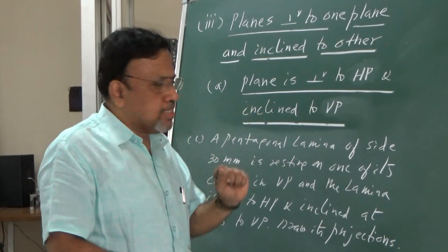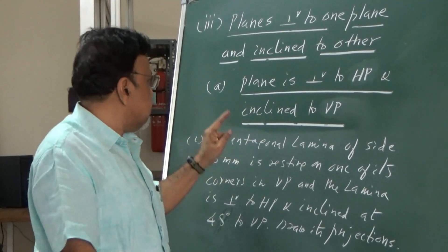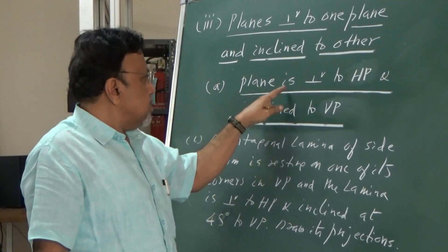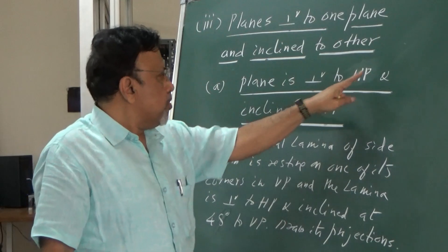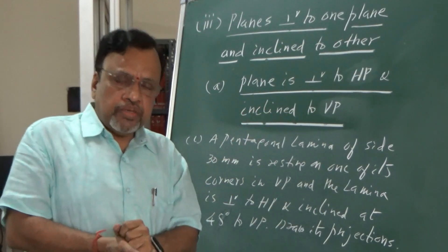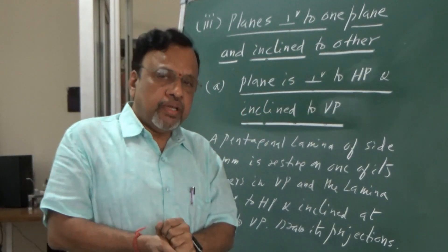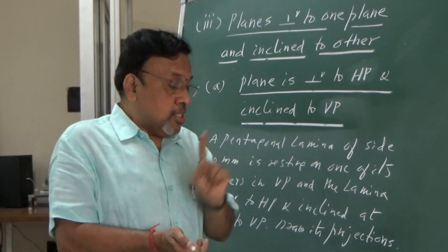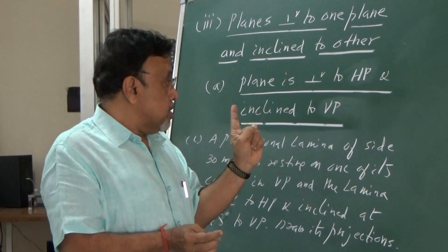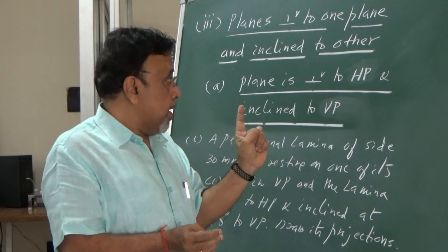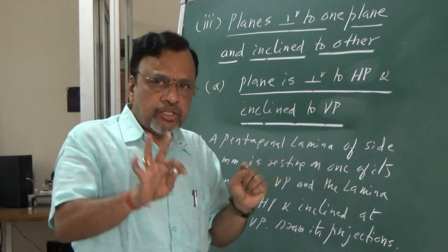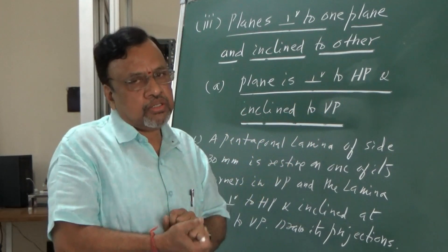Now let us analyze the second case. Second case: the plane is perpendicular to HP and inclined to VP. Since the lamina is inclined to one plane and perpendicular to the other, I need to do it in two stages.